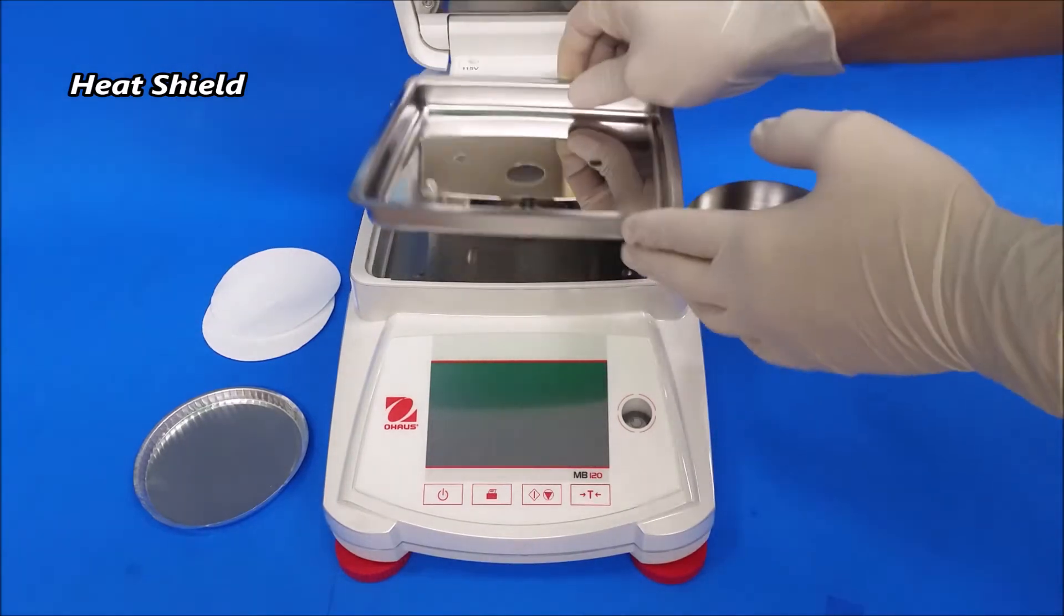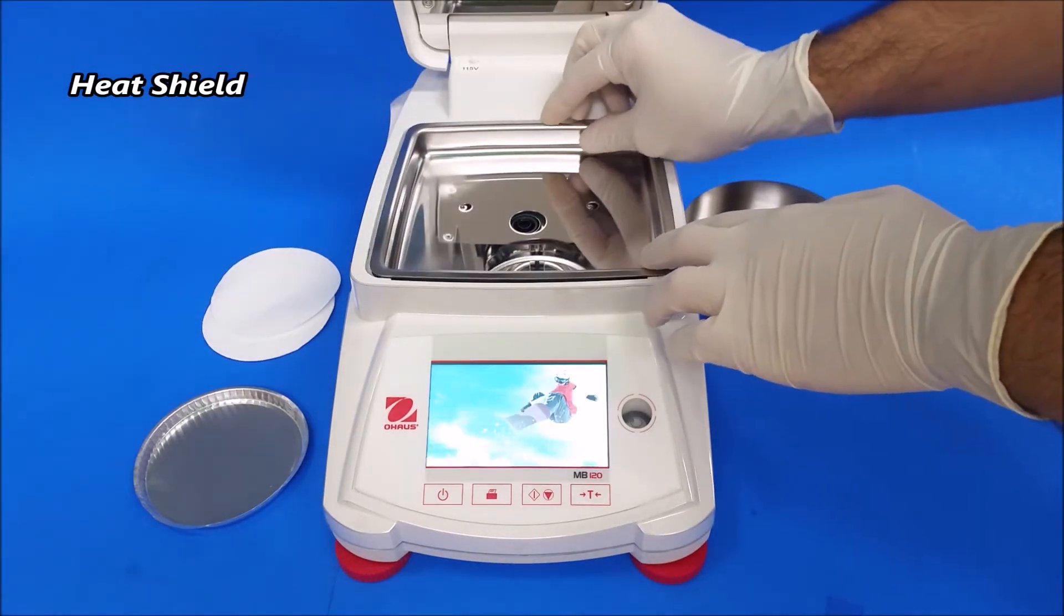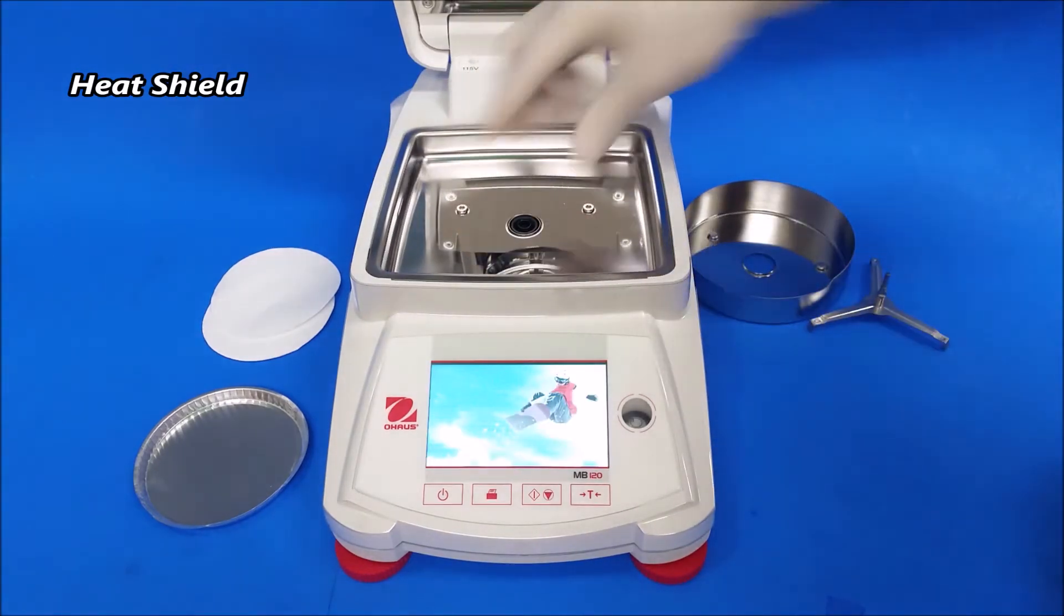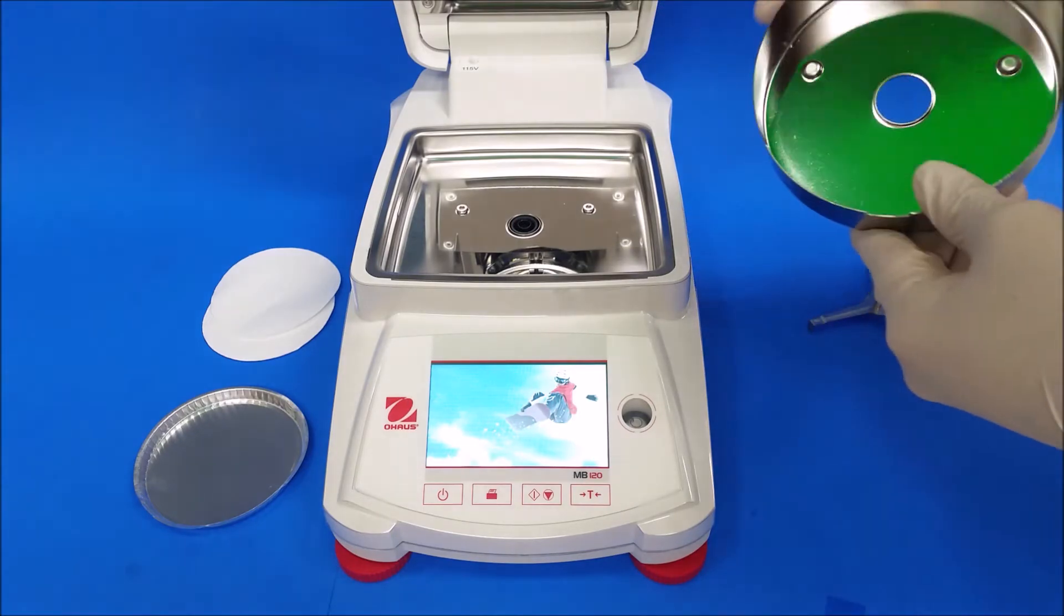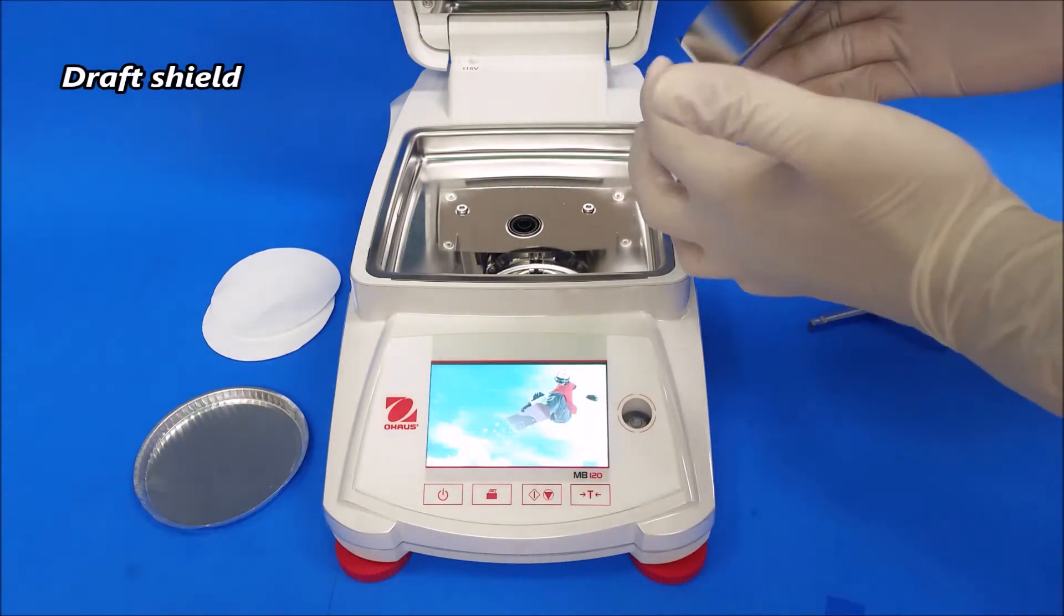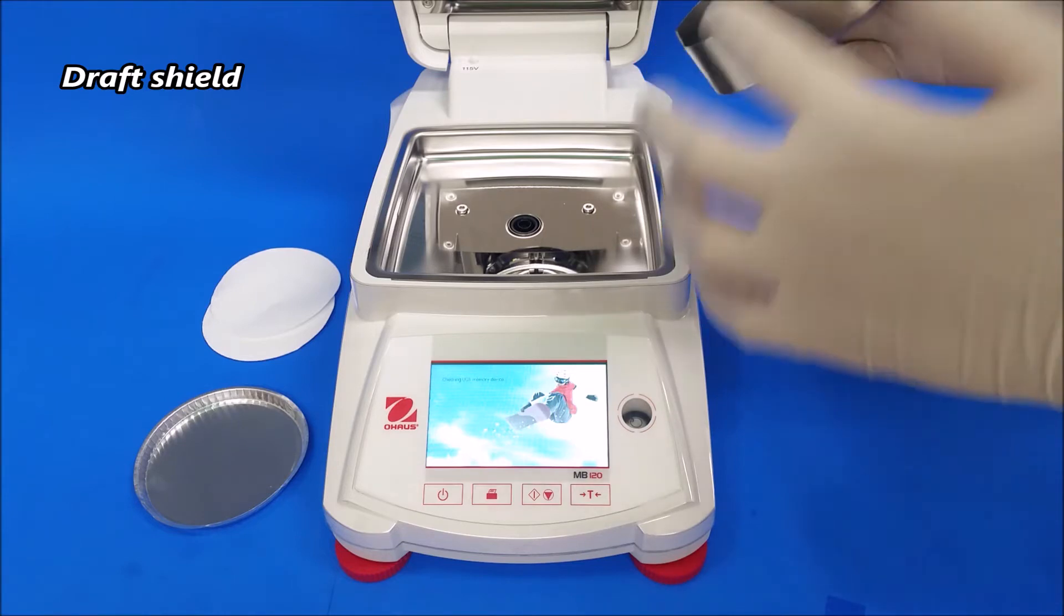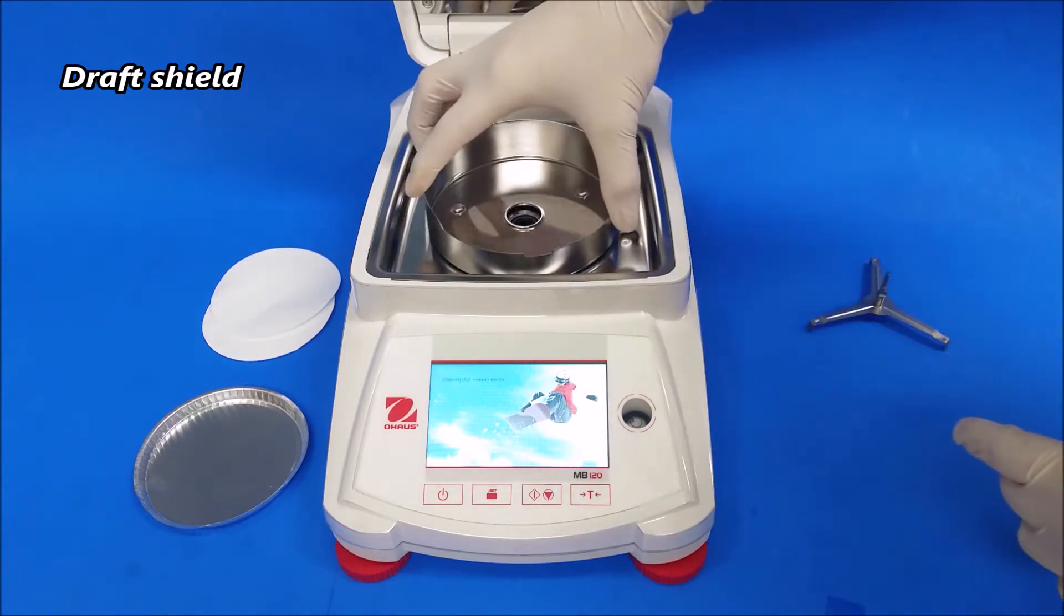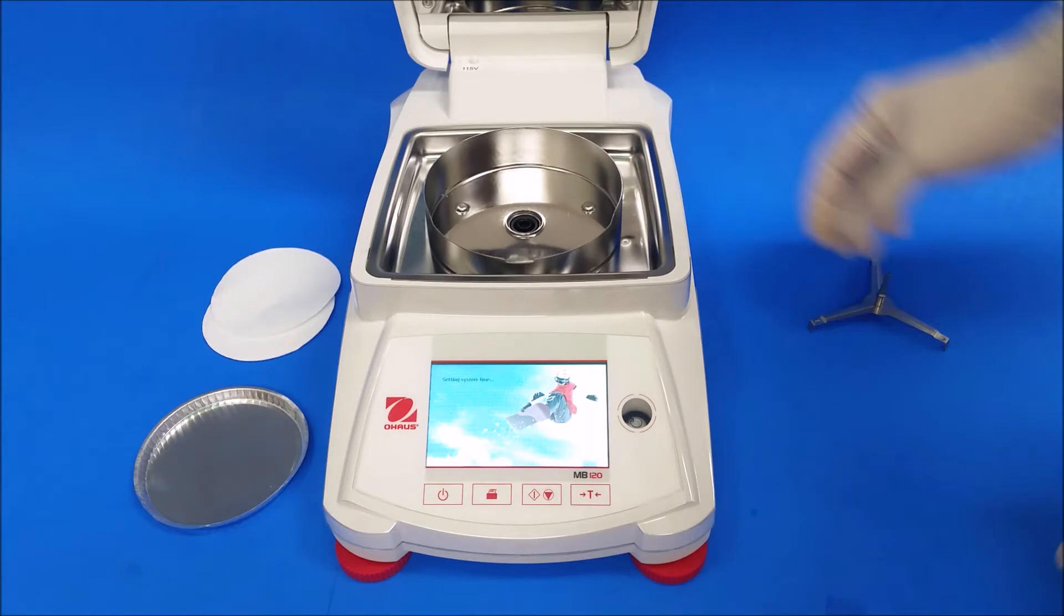First part we're going to put is the heat shield. It should fit perfectly with the two screws here. Next is the draft shield. You can see it has a hole cut through here. It should be facing towards you. Line it up with the screws. It locks in place.